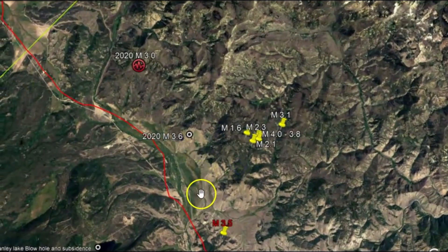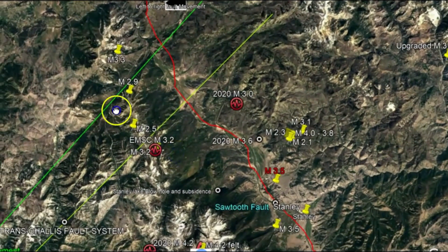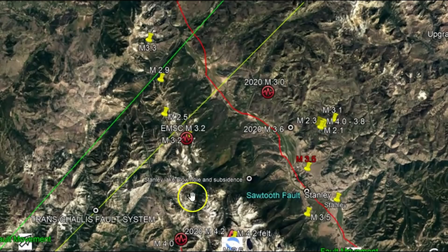So let's pull this out a little bit and see exactly where this was. Okay, here we got the Sawtooth fault zone. And we also have, which I got drawn out in two different color green lines. That is the trans chalice fault system that goes all the way up to Canada.